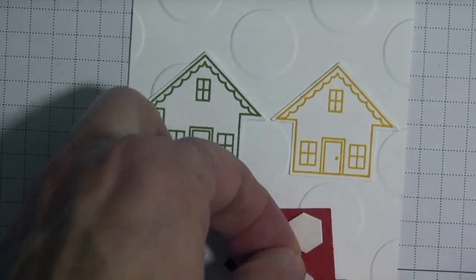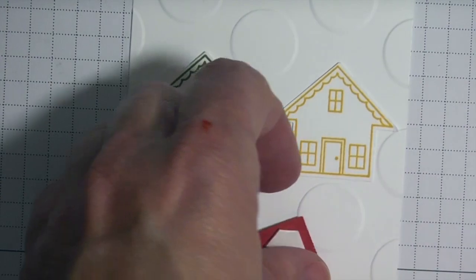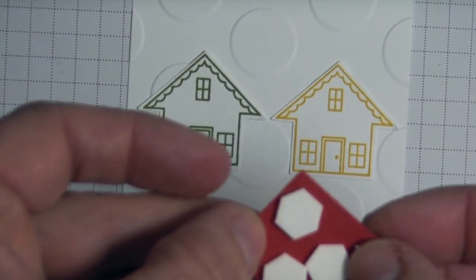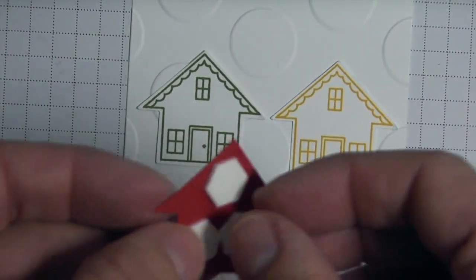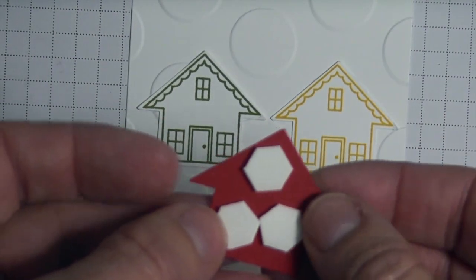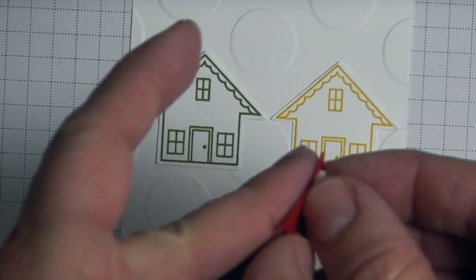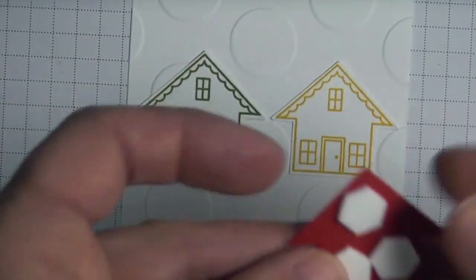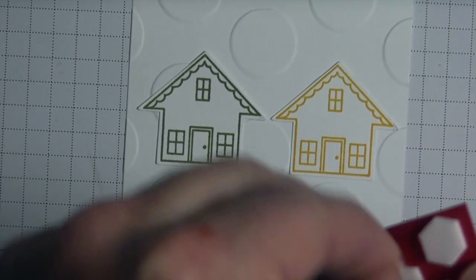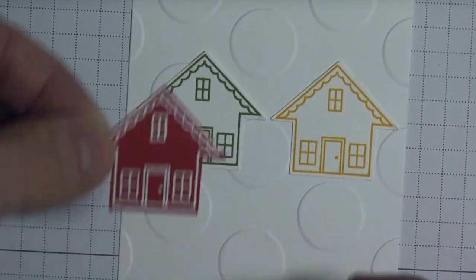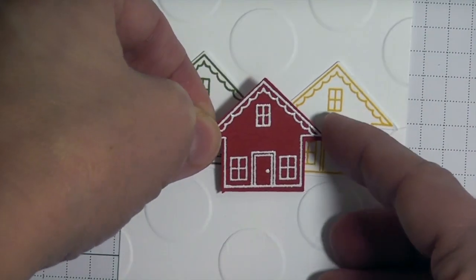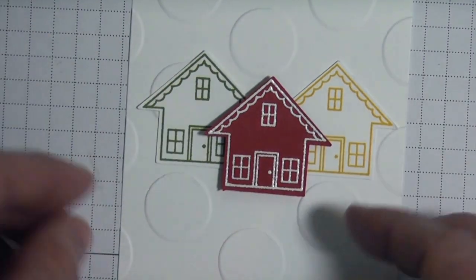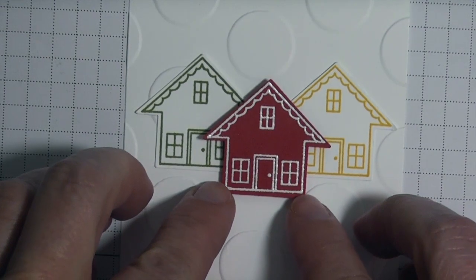You can get it for free if you spend fifty dollars or more from the celebration catalog. I've added dimensionals to the front just to give the card a little dimension. I'm going to kind of offset it a little bit lower on the card so that the red is the focal point.